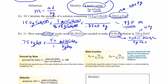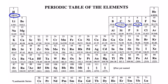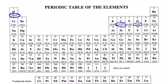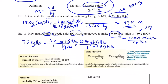Now I want grams of acetic acid, so I put moles of acetic acid on the bottom and grams of acetic acid on top using the molecular weight. From the periodic table, acetic acid HC₂H₃O₂ has two carbons, four hydrogens, and two oxygens: four hydrogens at 1.01, two carbons at 12.01 each, and two oxygens at 16.00 each, giving 60.06 grams per mole.